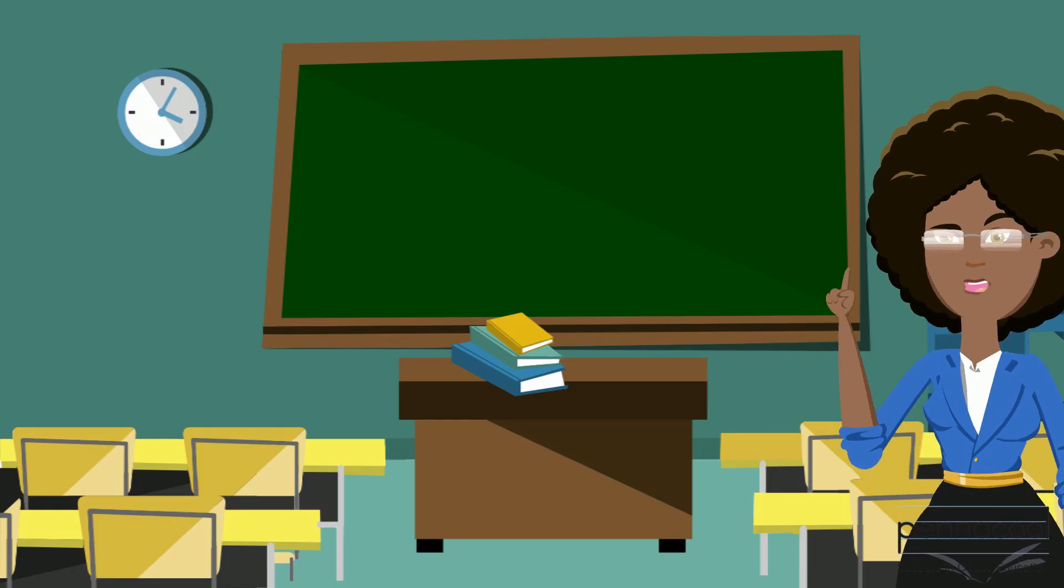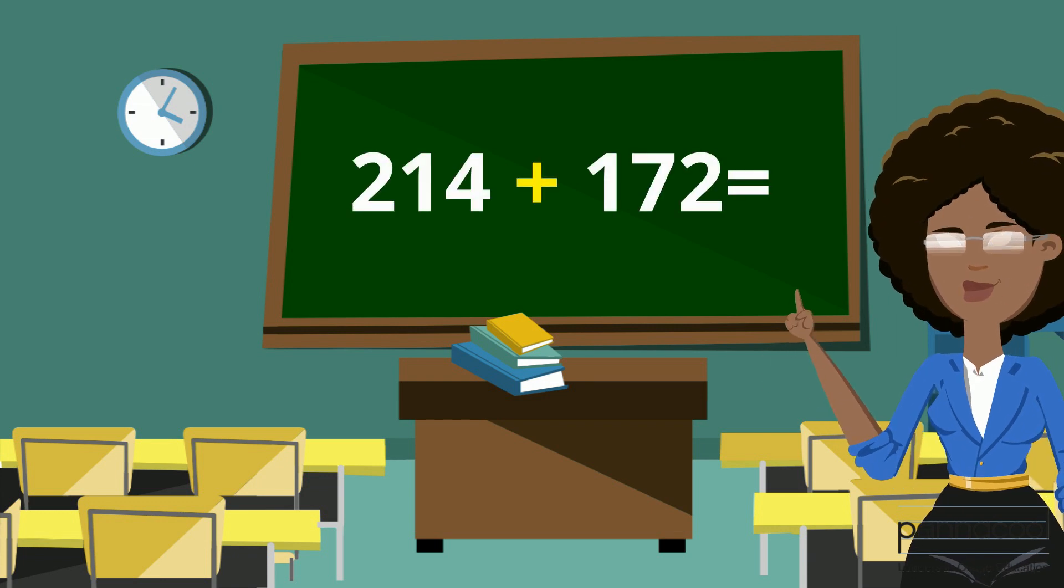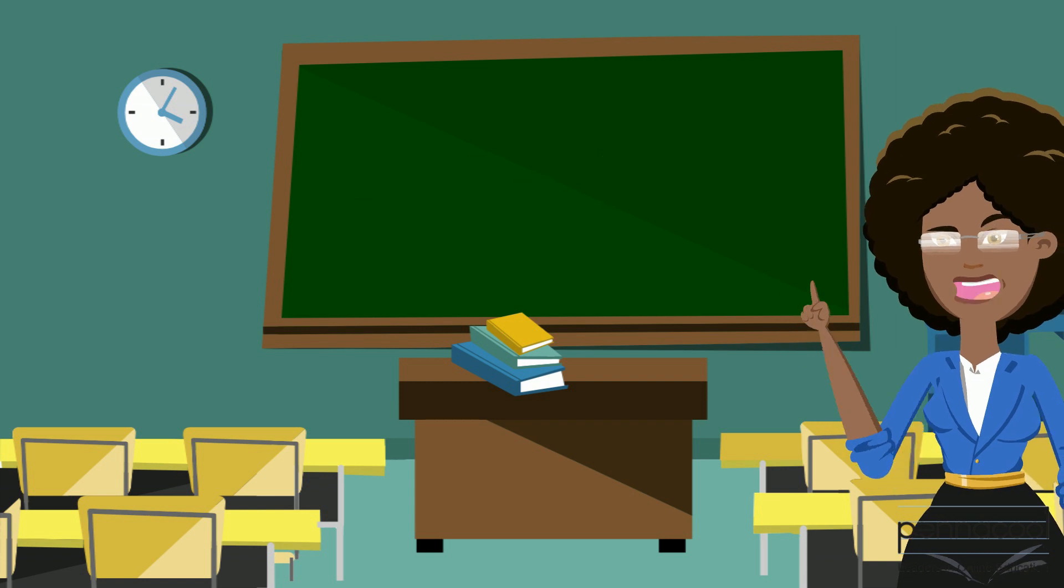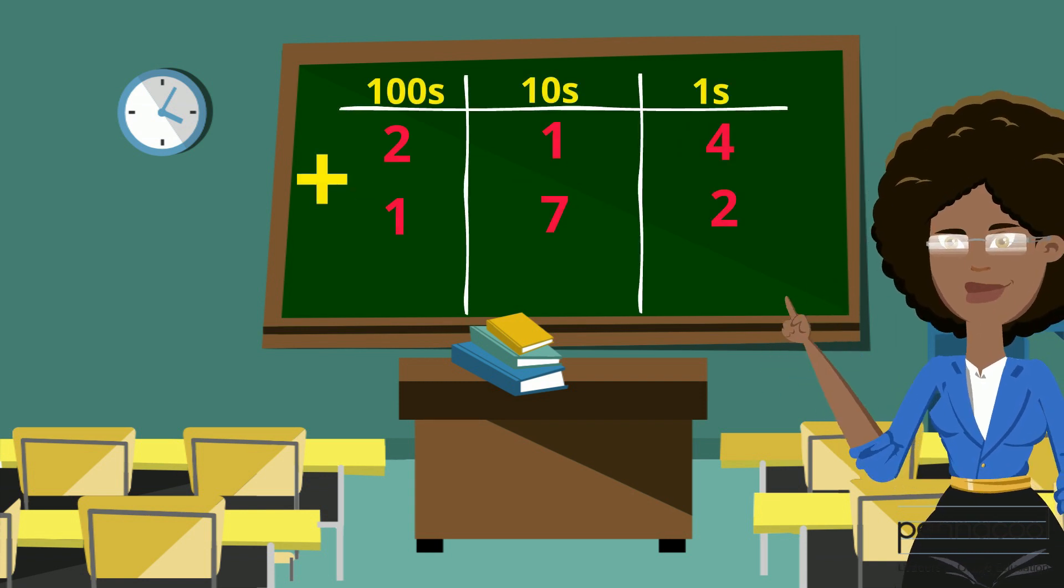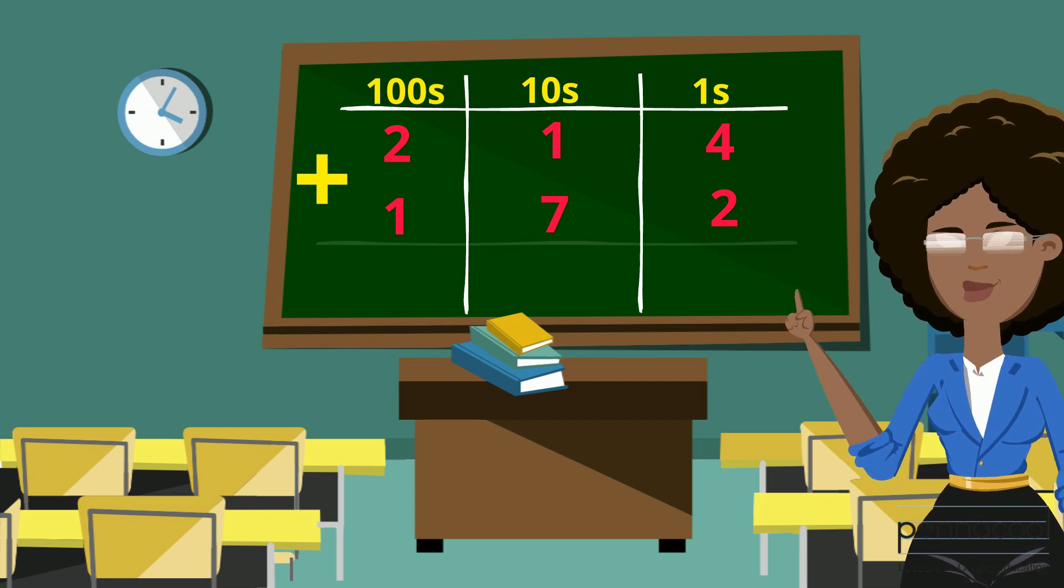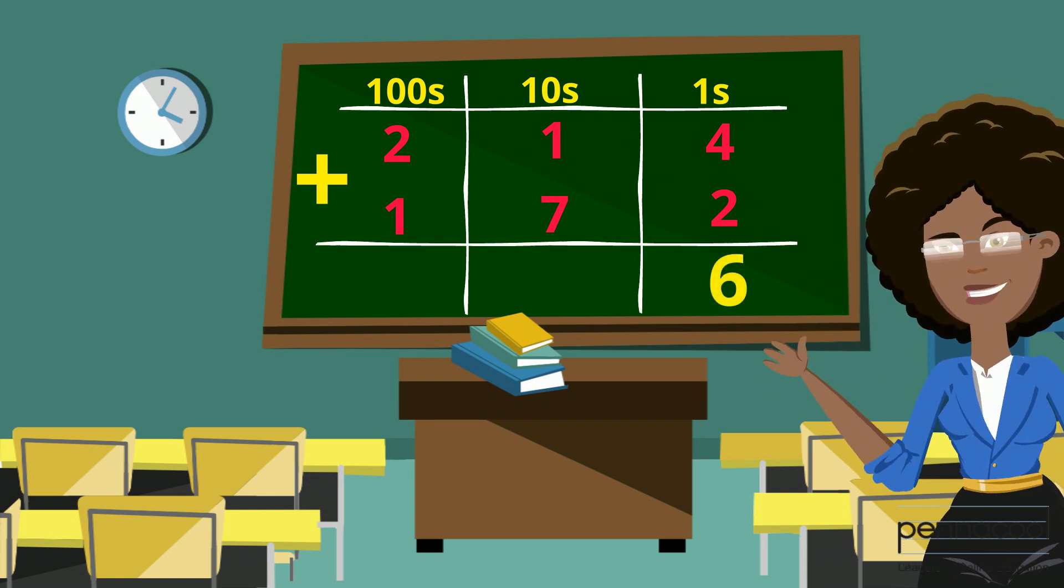For our last example, we have 214 plus 172. And what is that equal to? Well, let's set up our place value chart and begin with adding our ones column values. First, we add 4 and 2, which is 6. So we put 6 in our total space in our ones column.